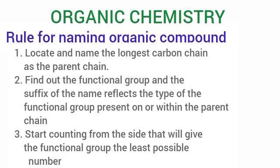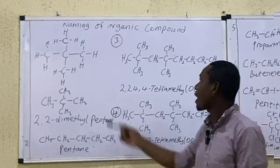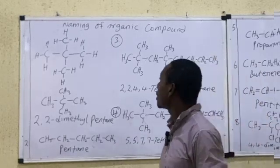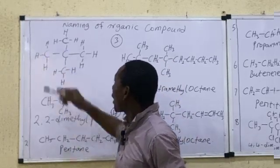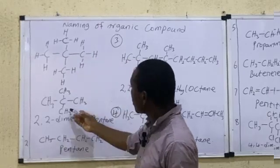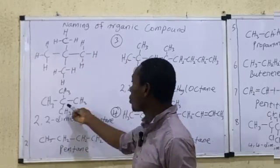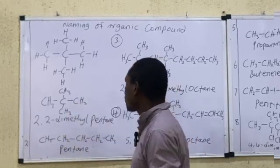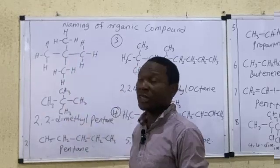Let's apply these rules in naming organic compounds. This structure shown here is in condensed form — you can expand it for better understanding. The carbon shown has three hydrogen atoms attached, and we'll work through naming it step by step.